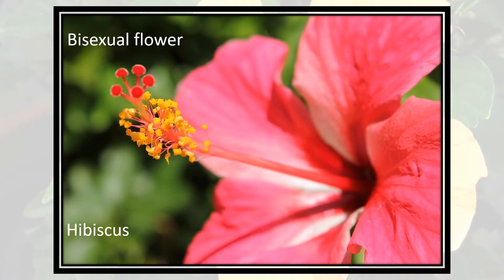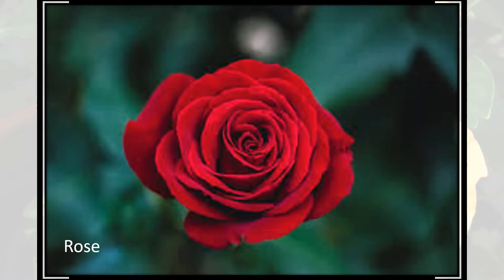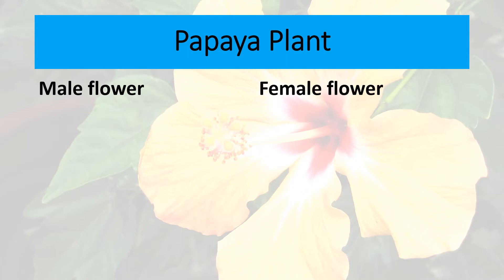Bisexual flowers are flowers that consist of both male and female parts. For example, hibiscus, mustard flower, and also rose flower. This is an example of a unisexual flower. For example, the papaya plant — it consists of a male flower and a female flower, and the flowers are different on different trees.